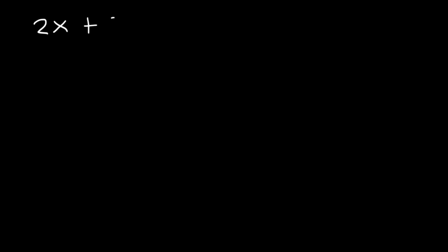Consider the following two equations: 2x plus 3y equals 8, and 5x minus 3y equals negative 1. How can we solve these two equations using elimination, which is also known as the addition method?